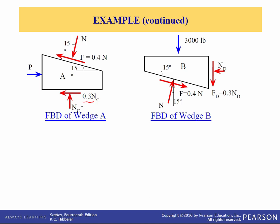The frictional force between the ground and A is 0.3 times N_C. The frictional force between the two wedges is 0.4 times N. We have the normal force between wedges A and B, and the applied load P, and the normal force C between the ground and wedge A. For the free body diagram of wedge B, remember the forces common to both blocks must be in opposite directions. Now we have F pointing down and to the right at 0.4N, and the normal force pointing in the first quadrant. We have the normal force and frictional force between the wedge and the wall, where the frictional force is 0.3 times N_D. So we have two unknowns: N_D and N.